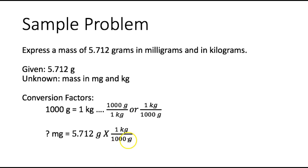That's right. I'm going to use 1,000 grams on the bottom and 1 kilogram on the top. So that lets me cancel out grams. And now to solve my problem I'm going to take 5.712 divided by 1,000 and I get 0.005712 kilograms.